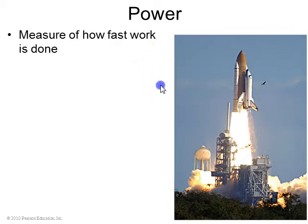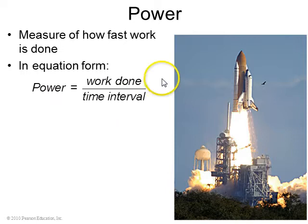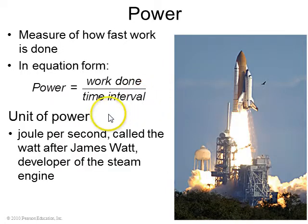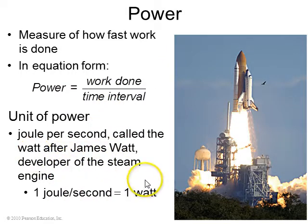Power is a measure of how fast the work is done. The equation for that is simply work done divided by the time interval. The unit of power is a joule per second, named after James Watt, the developer of the steam engine. It's called the Watt. One joule per second equals one Watt.